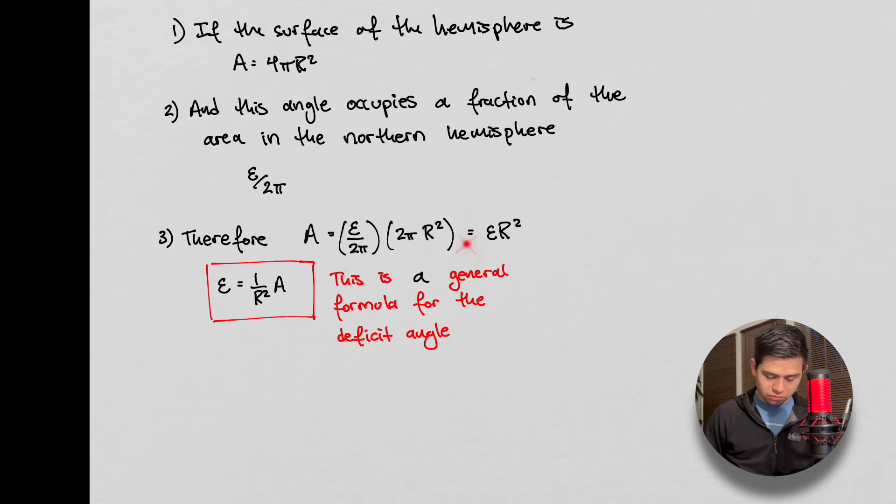And so we multiply all this together, we get epsilon r squared, because these two guys will cancel out, and we get the deficit angle as a function of the area and the radius of the sphere. And what's going to be interesting is that this is going to be considered a general formula for the deficit angle, even when we're not talking about spheres. And we'll see why later, this is a very brief, very soft introduction into this topic.